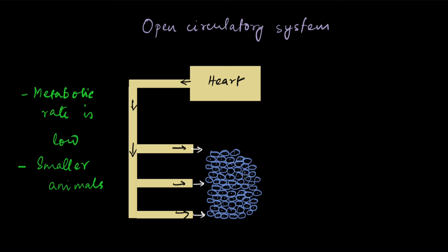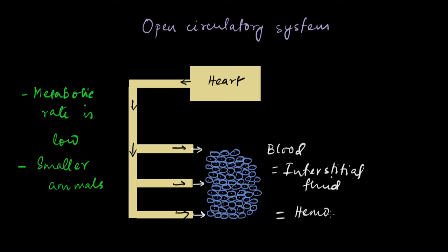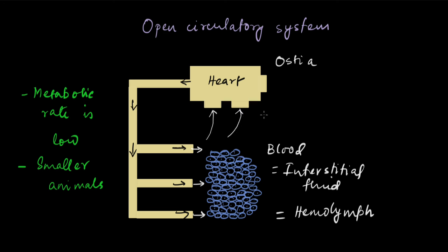In the open circulatory system, the blood and the interstitial fluid are one and the same thing — this combined fluid is called hemolymph. After bathing the tissues, the blood goes back to the heart through tiny pores in the heart called ostea, re-entering through these openings.